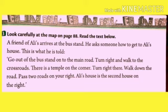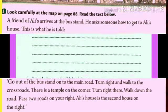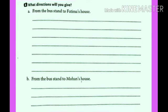A friend of Ali's wants to go to Ali's house but doesn't know how to reach there from the bus stand, so he asks someone for directions. This is what he is told. Similarly, you have to give directions if someone asks how to get to Fatima's house and Mohan's house from the bus stand.